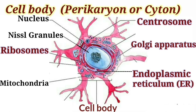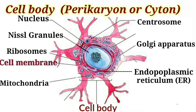The next structure is the cell membrane, which surrounds all the organelles. The surface or plasma membrane of a neuron appears to be basically similar to that of the general cell structure. Within the central nervous system, nerve cells are closely invested by a network of neuroglial cells and fibres.